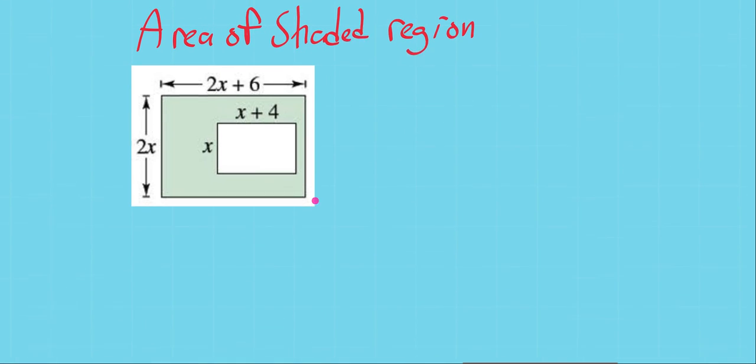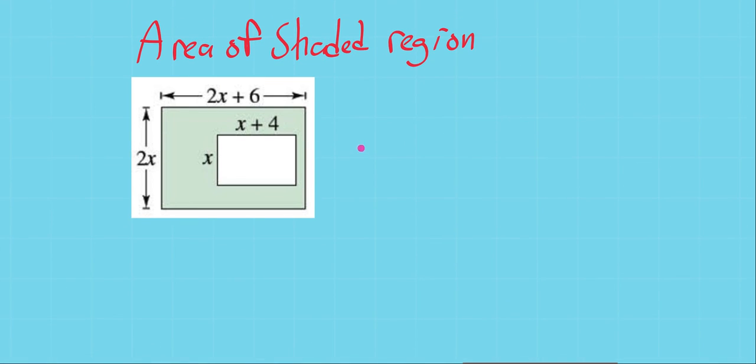Sometimes you'll have a problem like this, and let's find the area of the shaded region. So this asks us to find the area of the big shape minus the area of the small shape. We're cutting this one out of the bigger one. So these are both rectangles.